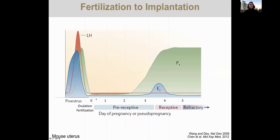Both mice and humans and mammals in general use the ovary to communicate to the uterus. The ovary secretes ovarian hormones — estrogen and progesterone — which bind to receptors on the uterus and prepare it for an incoming pregnancy. Just like humans have the menstrual cycle, mice have an oestrus cycle. On the day of ovulation, the levels of estrogen rise and then drop. For two days, the levels of hormones stay low. On day two and a half to three of the mouse pregnancy, progesterone levels start to rise with a small increase in estrogen. This is when embryo attachment occurs.